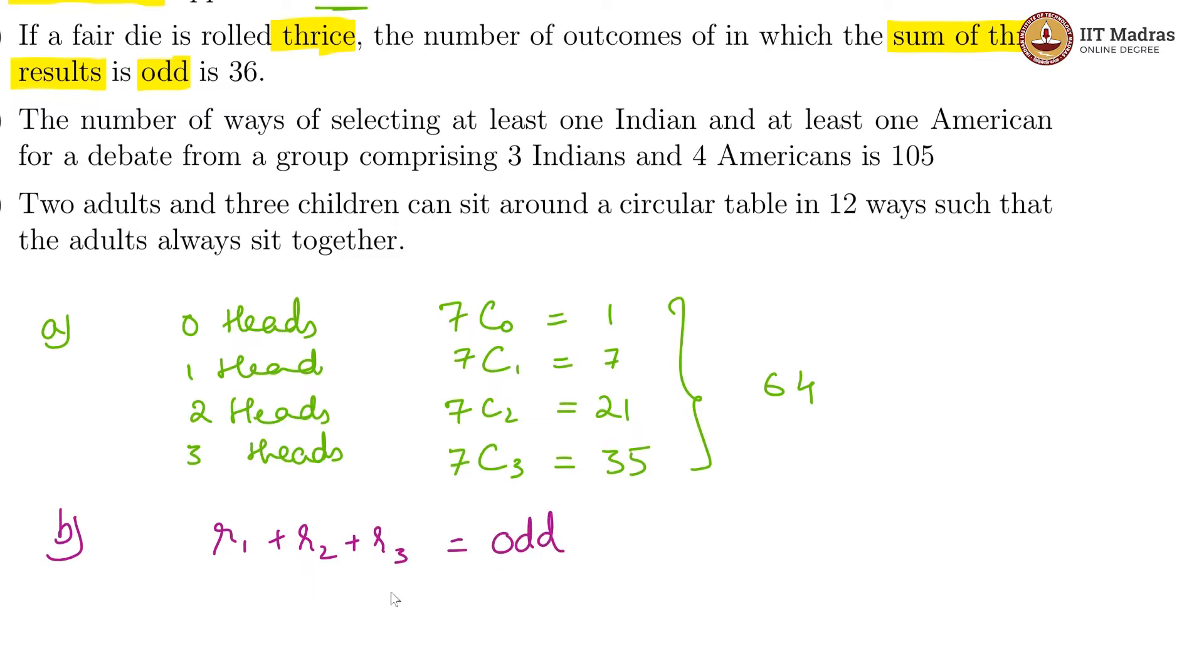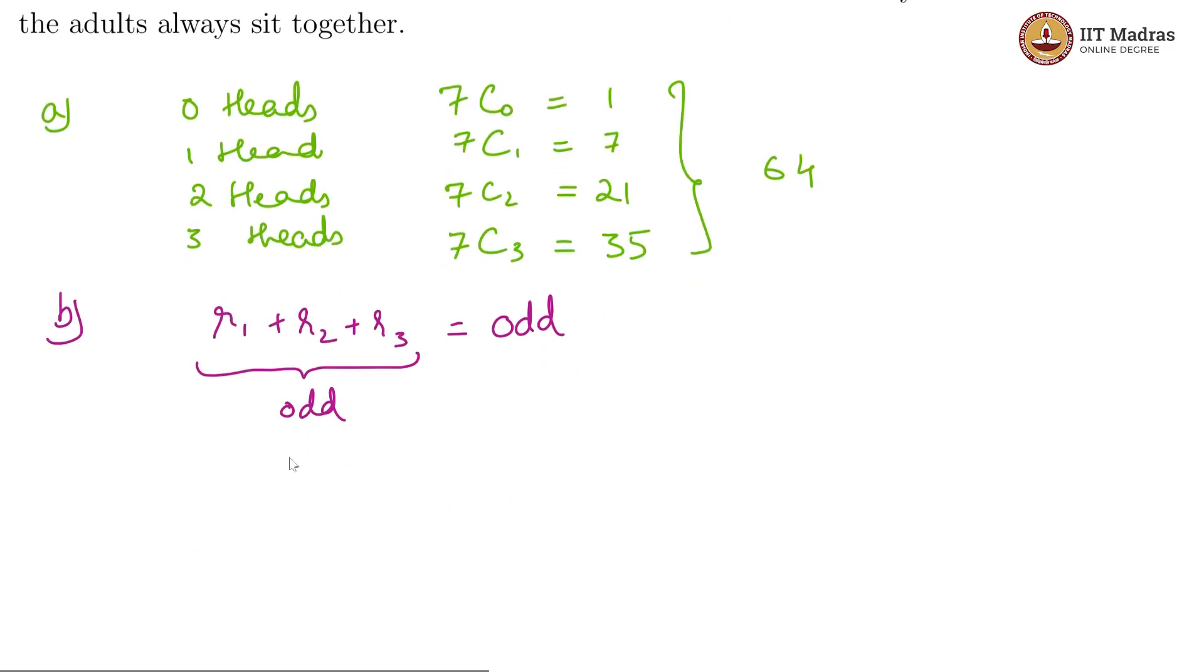And this can only happen if all three of them are odd or two are even and one is odd. These are the only two cases, which is all are odd or two are even and one is odd.